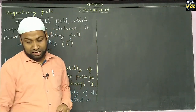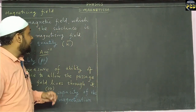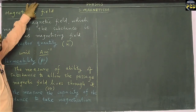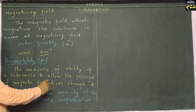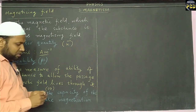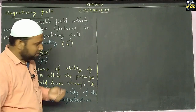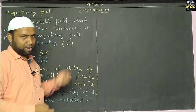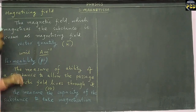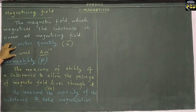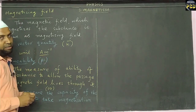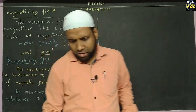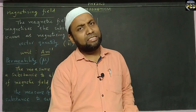The magnetic field which magnetizes a substance is referred to as the magnetizing field. It is a vector quantity which is represented by the letter H vector, and its unit is ampere per metre. Similarly, when I try to magnetize this nail...